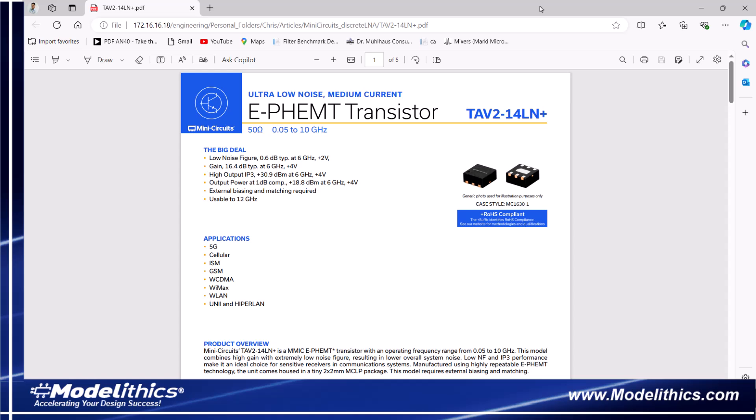This LNA includes the Mini-Circuit's TAV2-14LN Plus transistor. We see here that this device has an operating frequency range of 50 MHz to 10 GHz. At 6 GHz, the datasheet specifies a noise figure of 0.6 dB and a gain of 16.4 dB.